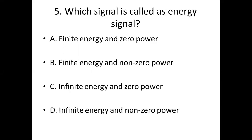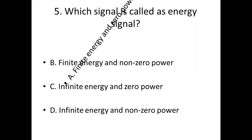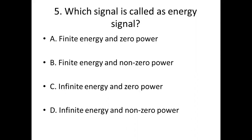Question 5: Which signal is called an energy signal? Option A: finite energy and zero power. Option B: finite energy and non-zero power. Option C: infinite energy and zero power. Option D: infinite energy and non-zero power. Answer: Option A — finite energy and zero power.